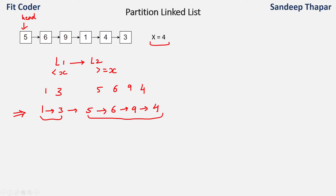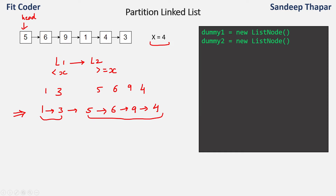So we just traverse the linked list starting from the head, keep track of two linked lists, and at the end join both. In many previous linked list videos I have explained that we can make linked list problems easier by keeping track of dummy pointers. Dummy pointers help us avoid conditions where a linked list is empty. For now, let's assume we have two dummy pointers, dummy1 and dummy2.